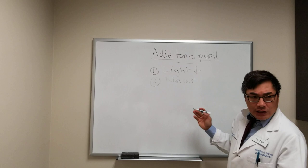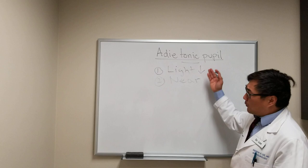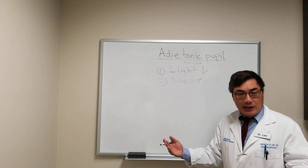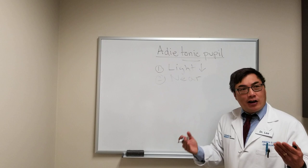In the Adie's tonic pupil, it's usually unilateral initially and then becomes bilateral over time in some percentage of patients. When it's unilateral, it makes it a lot less likely to be central, because the central causes of light-near dissociation are usually bilateral and not unilateral.